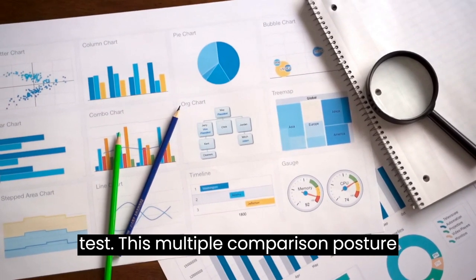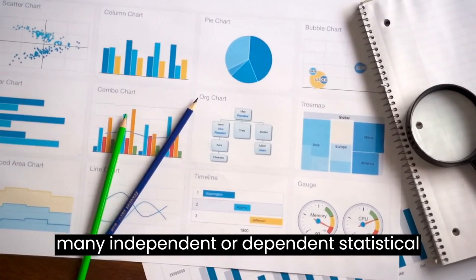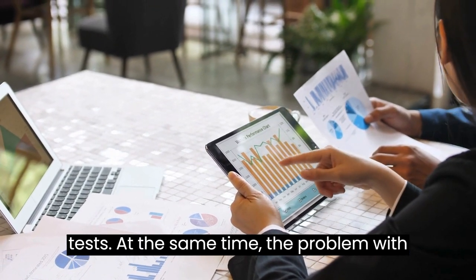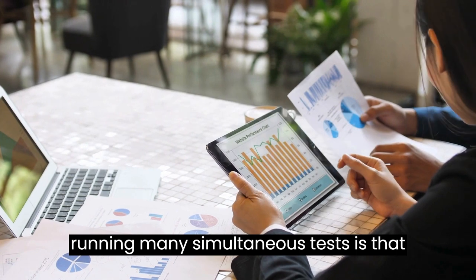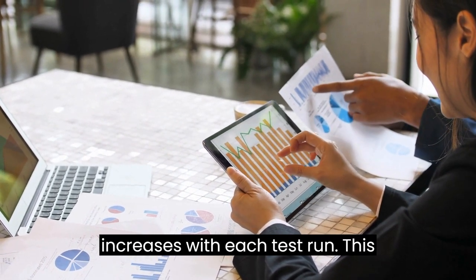This multiple comparison post-hoc correction is used when we are performing many independent or dependent statistical tests at the same time. The problem with running many simultaneous tests is that the probability of a significant result increases with each test run.